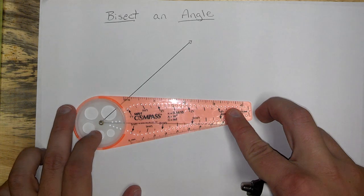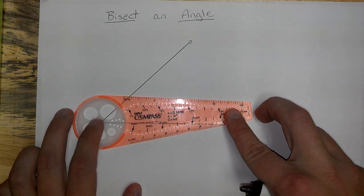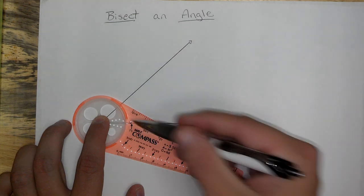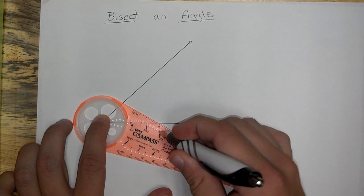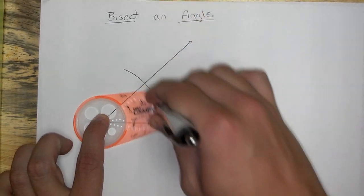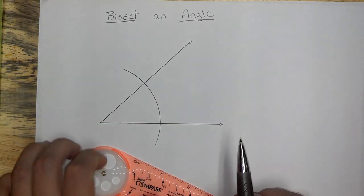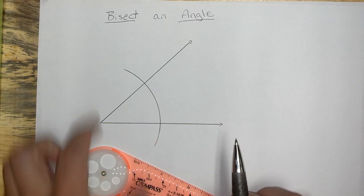Step 2. Go ahead and create an arc that goes all the way through our angle. I'm just going to come out here and pick a nice mark. There we go. Doesn't matter how big or how small that arc is. Make sure it goes through.